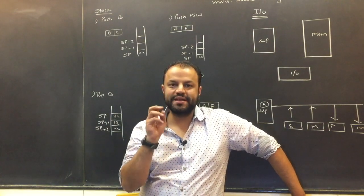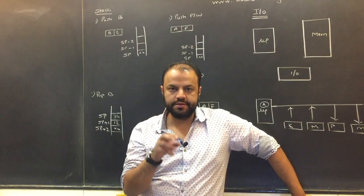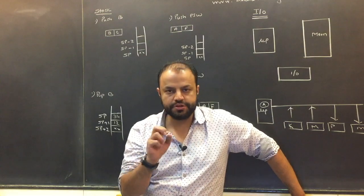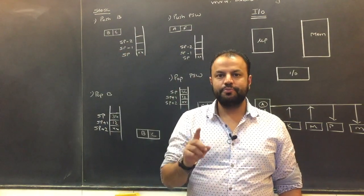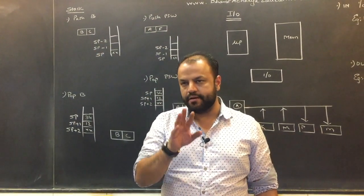You cannot push an individual register — you need to push a register pair. So when you write push B, you're pushing the BC pair.